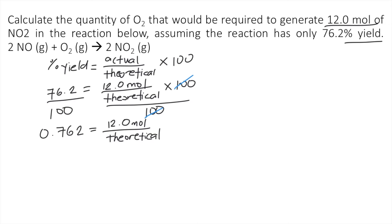Then what we do next is we cross-multiply. So that will give us 0.762 times the theoretical yield.